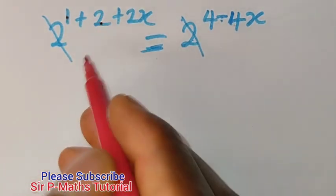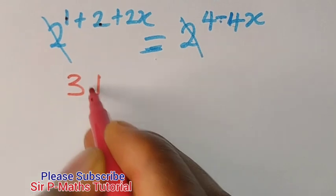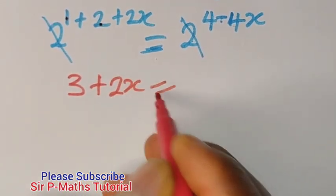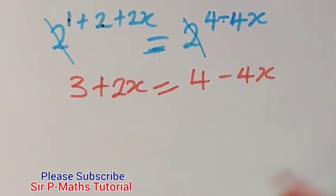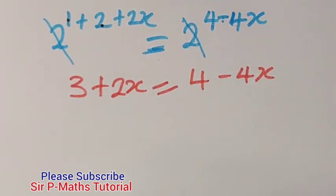So I will add 2 and 1 to have 3 plus 2x equal to, bring this one down, 4 minus 4x. Now at this point, we collect the like terms.